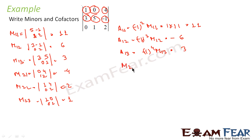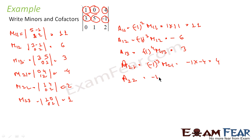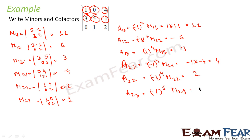Similarly A21 is (-1)^(2+1) into M21, which is -1 into -4 = 4. Cofactor A22 is (-1)^(2+2) into M22, which is 1 into M22 = 2. Similarly A23 is (-1)^(2+3) into M23, which gives -1 into 1 = -1.